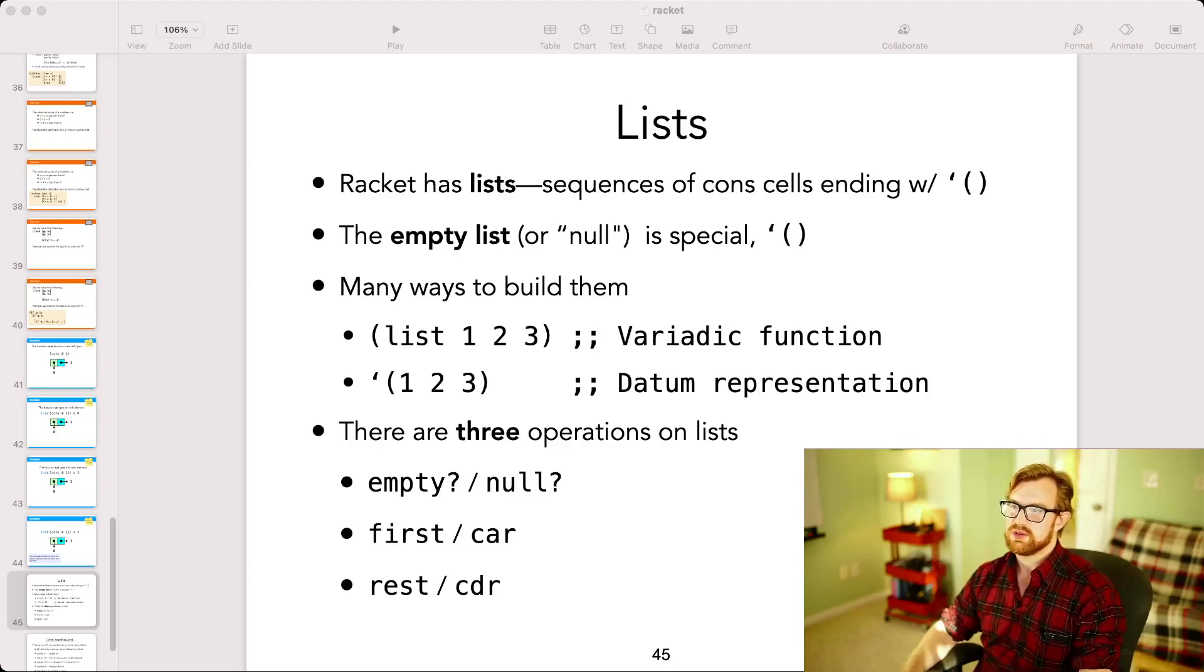Now in Racket, a list is one of two things. It's either the special empty list or it's a cons cell whose left element is some head element of the list or first element of the list and whose cdr is the rest of the list. Now there are a whole bunch of different ways to build lists in Racket. I'm going to just teach you two today and then we're going to see some other ones later on. So the first is that you can use the variadic function list. If you give list a number of arguments, it will construct a list for you with those arguments. It's just a normal function.